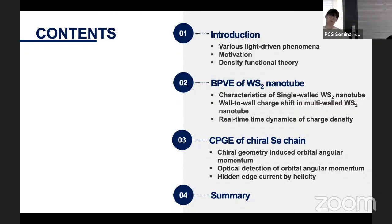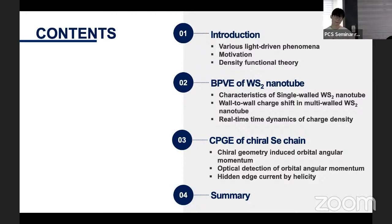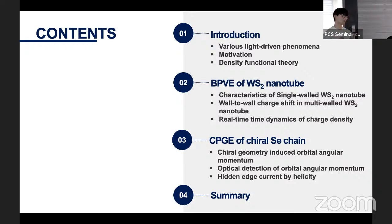Here is the outline of my presentation. First, I will introduce various experimentally observed light-matter interactions, especially light-driven phenomena. To explain these experimental findings, I will suggest that density functional theory and time-dependent density functional theory are effective ways to describe these light-driven phenomena. Following that, I will introduce two phenomena: the bulk photovoltaic effect and the circular photogalvanic effect. After that, I will conclude my talk.